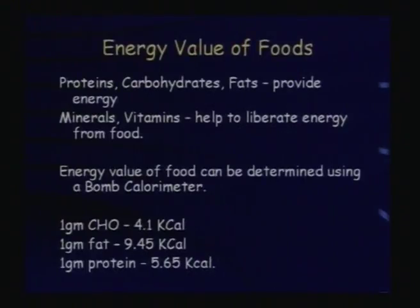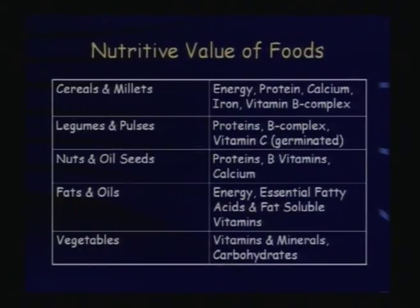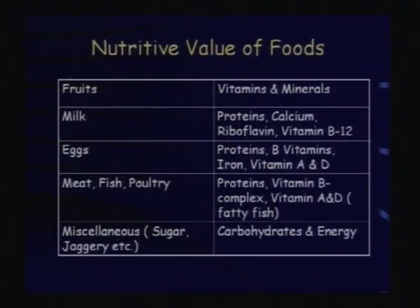Regarding energy value of foods, proteins, carbohydrates, and fats are direct sources of energy. Minerals and vitamins do not provide direct energy but help liberate energy from food. Using a bomb calorimeter, it has been found that 1 gram of carbohydrates gives 4.1 kilocalories, while 1 gram of protein gives 5.65 kilocalories. Food can be divided into groups: cereals and millets, legumes and pulses, fats and oils, and vegetables. Each group provides most nutrients but is deficient in some. For example, cereals lack the essential amino acid lysine; nuts and oil seeds lack fat-soluble vitamins; fruits and vegetables lack essential fatty acids. Animal foods like milk, eggs, meat, fish, and poultry provide almost all nutrients and can be considered complete foods.